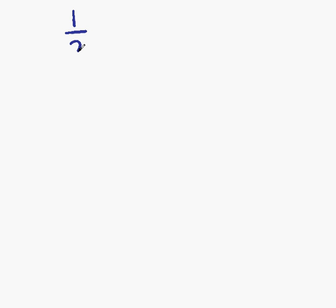In this lesson, we're going to look at equivalent fractions. The first fraction we're going to look at is 1 half — this is the first example of five groups of examples. What we want to do is find an equivalent fraction to 1 half. An equivalent fraction is a fraction that is equal to 1 half.